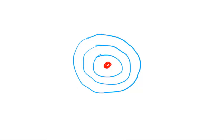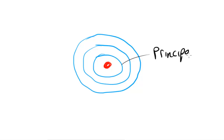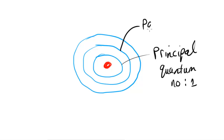These shells represent energy levels. The first shell would be the first energy level. What we call these different energy levels to show their value is principal quantum numbers. The principal quantum number of the first shell is 1, for the second shell it would be 2, and for the third shell the principal quantum number would be 3.